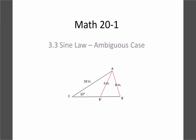Yesterday we looked at the Sine Law and figured out how it works. Today we're going to look at a special case called the ambiguous case. Ambiguous basically means you're not sure which it is. With certain situations we can actually get two different triangles that have the same measurements. Looking at this title page, we have a 33-degree angle for C, length 10, and length 6, but we could draw the triangle in two different ways — the 6 drawn normally or coming backwards. The 33, 10, and 6 stay the same; the only thing that changes is angle B and angle A.